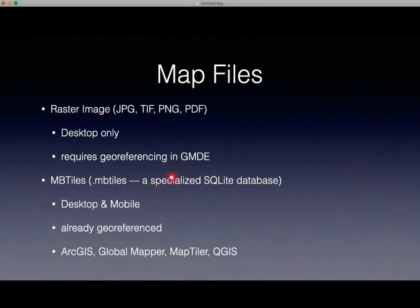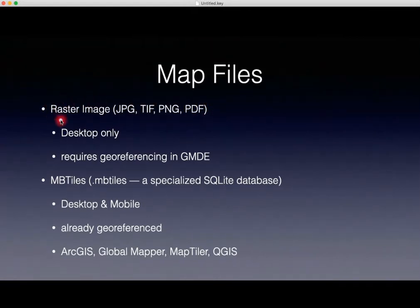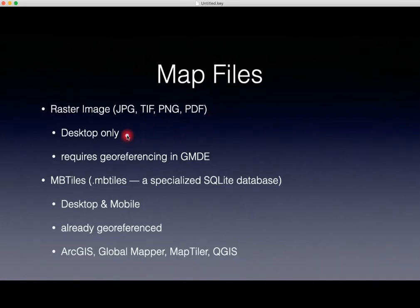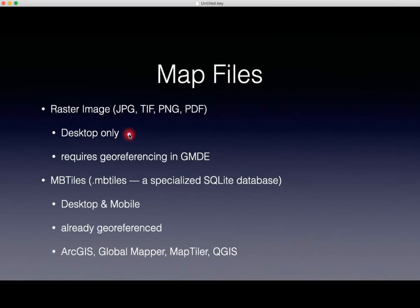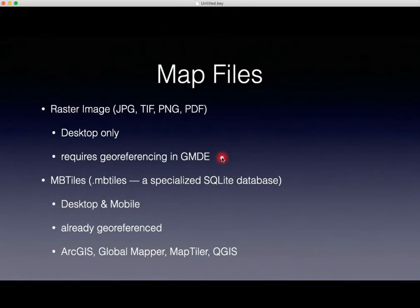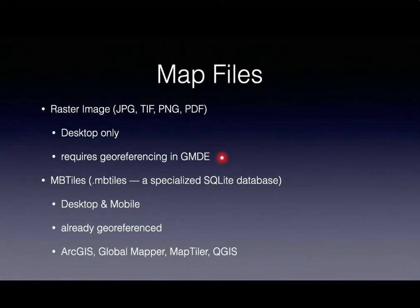Map files can be one of two types. Either raster images — that is JPEGs, TIFFs, PNGs, or even PDFs — and only the desktop version of GMDE can read raster images. Raster images require georeferencing in GMDE itself, so that adds an extra step.